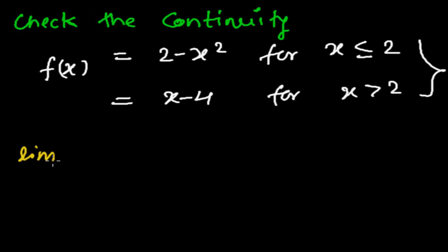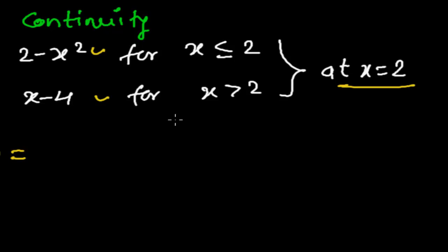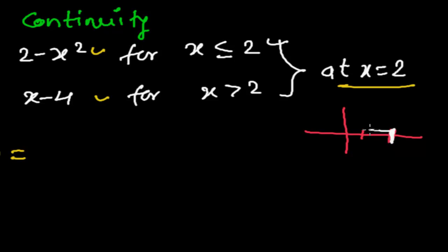So first we need to find the left-hand limit: the limit as x tends to 2 minus of f(x). Let me draw a small rough figure here. Since the left-hand side means values less than 2, and this piece — 2 minus x squared — is applicable for all values less than or equal to 2, we apply that formula.